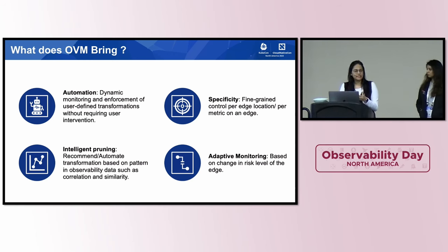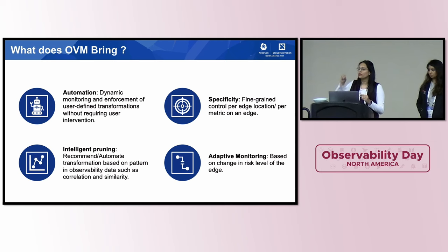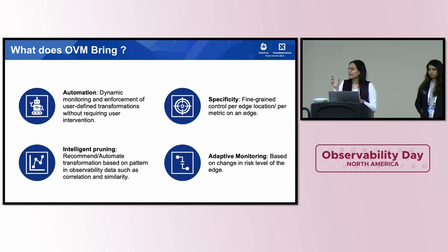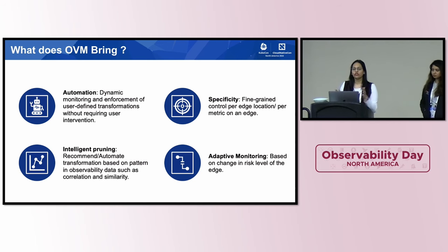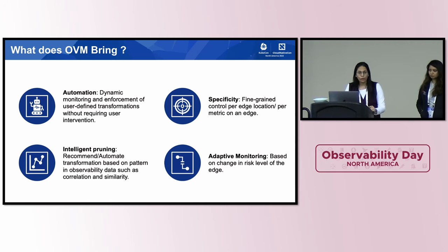The second feature is specificity — you have a tunable knob of what granularity you want the transformations to happen. It can be a metric, a metric with a certain label, or something at a lower granularity, like tuning the metric volume for an edge or a single cloud location. That tuning knob is something that OVM provides you.